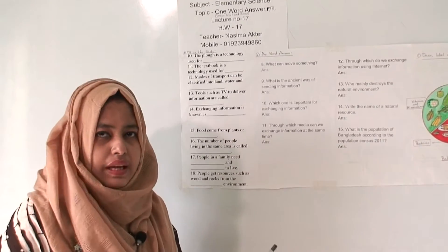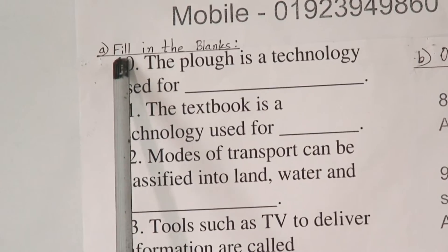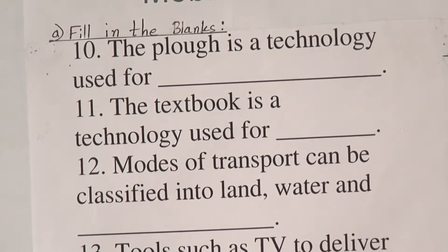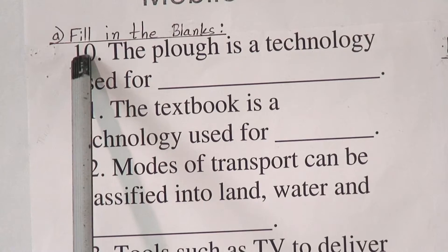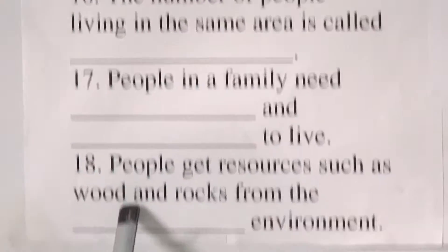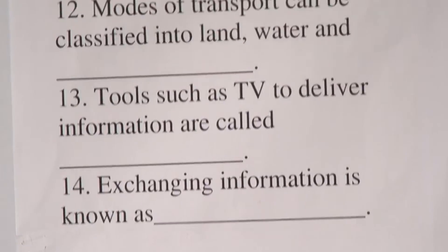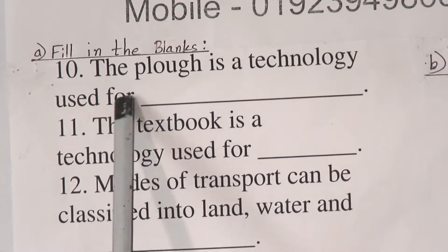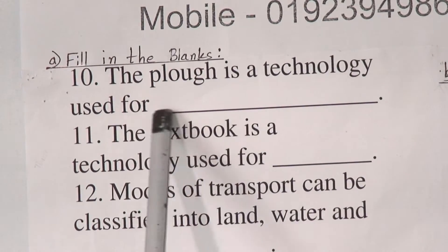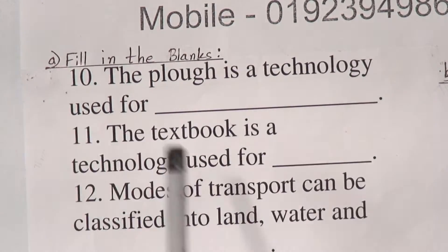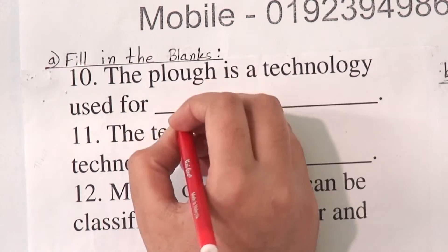Let us start today's class. First we will do fill in the blanks based on our suggestion. We have already done numbers 1 to 9, and today we will do from 10 to 18. Number 10: the plough is a technology used for — the answer is agriculture. So we will write here: agriculture.